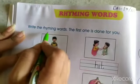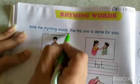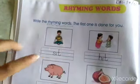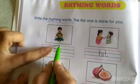See, write the rhyming words. Which words? Rhyming words. The first is done for you. See. What is this? Sit.